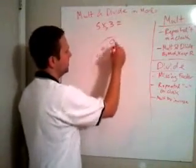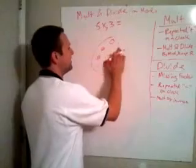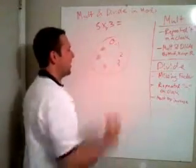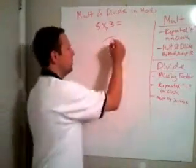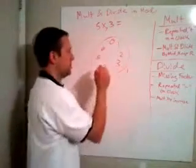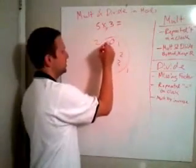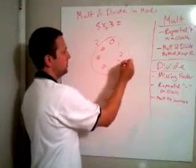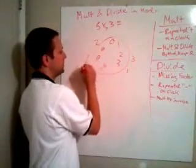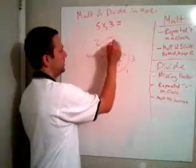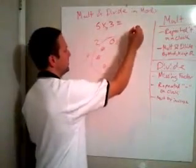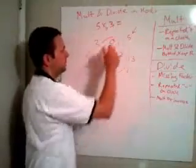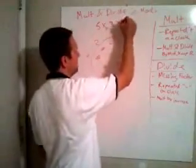On the clock, we go in groups of 3: 1, 2, 3 — that's 1 group of 3. Then 1, 2, 3 — that's 2 groups of 3. We're trying to get to 5 groups. Continuing: 3 groups, 4 groups, and finally 5 groups of 3. We landed on 1, so our answer is 1.